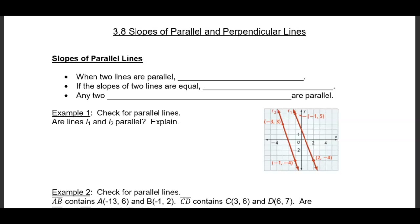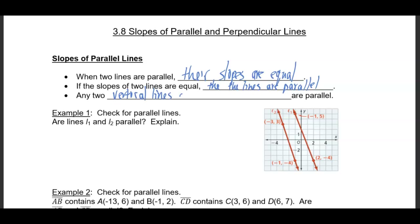Slopes of Parallel Lines. When two lines are parallel, their slopes are equal. If the slopes of two lines are equal, then the lines are parallel. Any two vertical lines or horizontal lines are parallel.